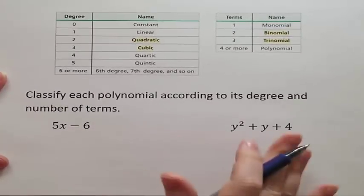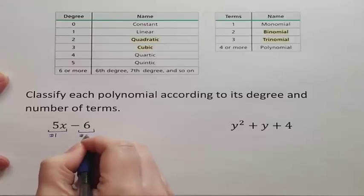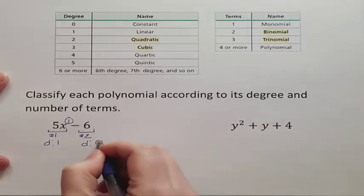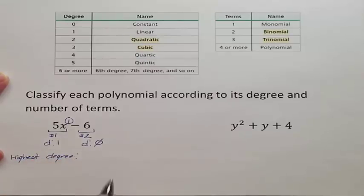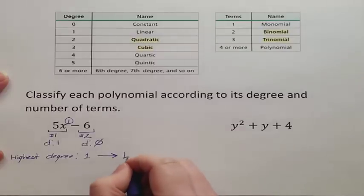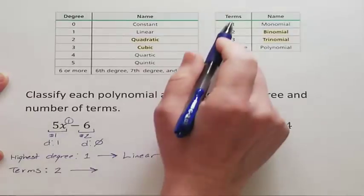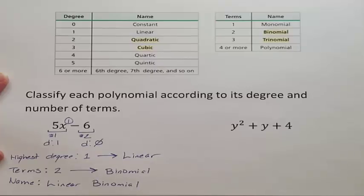Our last two examples: the first polynomial has 2 monomials. Monomial 1 has degree 1, monomial 2 has no variable so degree 0. The highest degree is 1, so the first name is linear. It has two terms, so it's a binomial. The full name of this polynomial is a linear binomial.